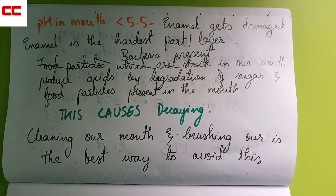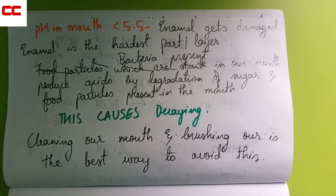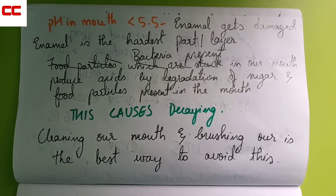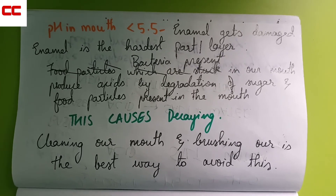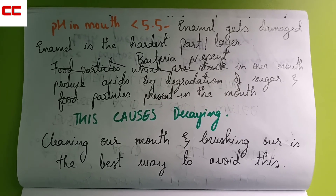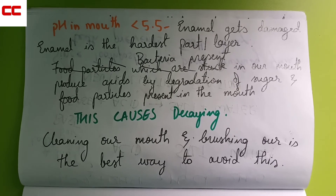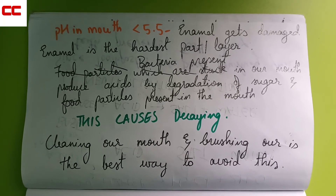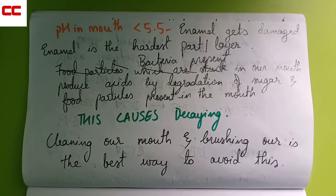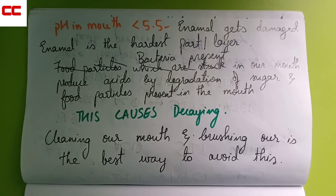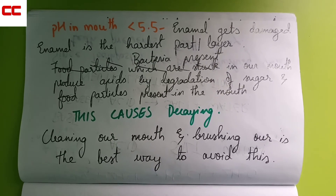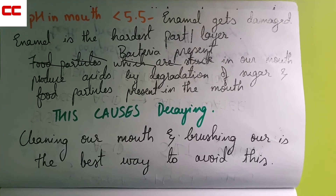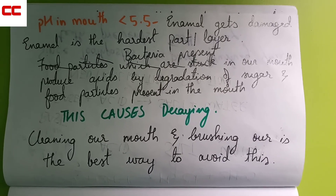The sugar gets degraded and bacteria produce acids, and food particles present in the mouth cause decaying. Food particles stuck in your mouth is why you need to brush regularly — to prevent bacteria from producing acids and degrading your teeth. That's when you get tooth decay, so cleaning our mouth and brushing is the best way to avoid this.